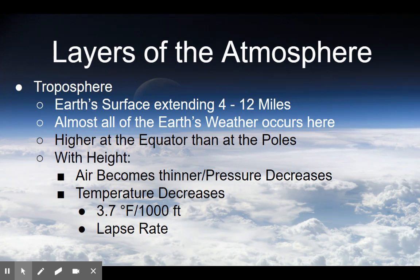The atmosphere we will focus on most in this class is the troposphere. Because it's a meteorology class, we'll focus most on this because almost all of the Earth's weather occurs here. The troposphere starts at the Earth's surface and extends anywhere from 4 to 12 miles above it. The troposphere is higher at the equator than at the poles.